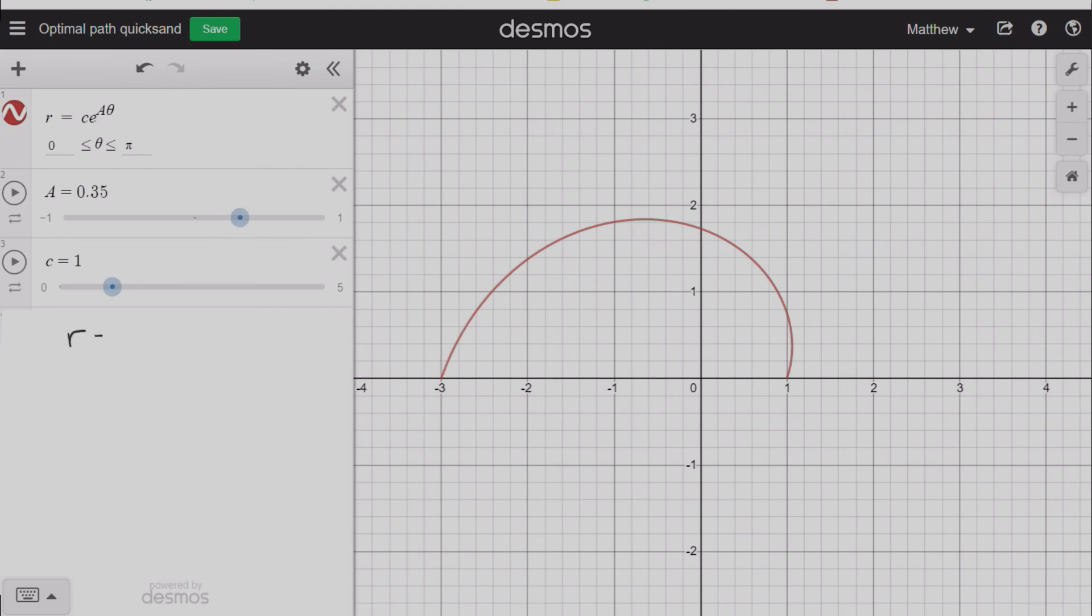To be more precise, we'll have to plug in our starting position, r is equal to 1 when theta is equal to 0, and our finish position, r is equal to 3 when theta is equal to pi. And there we have it. Our optimal path of least time occurs when c is equal to 1 and a is equal to log 3 over pi.